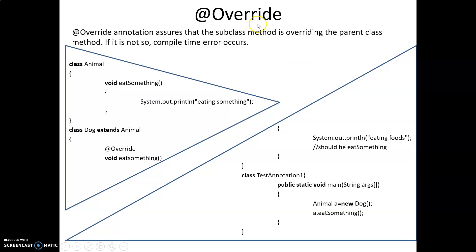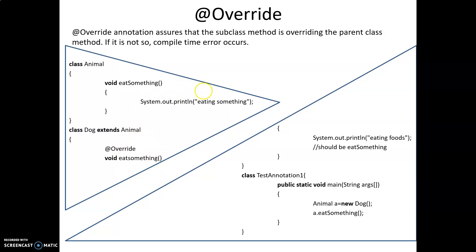Similarly there is @Override. We see method overriding many times inside our programs. For example, we have an Animal class with an eat() method, and then Dog extends Animal. The method is already written in the superclass, and when we write it again in the subclass we are overriding it. We use @Override to tell the compiler that we are making use of method overriding.